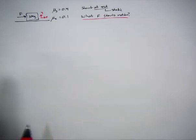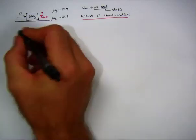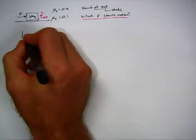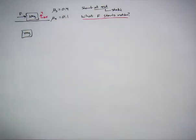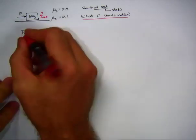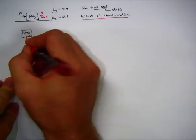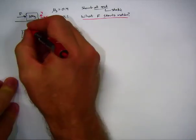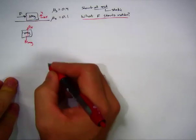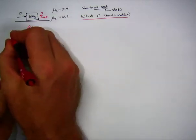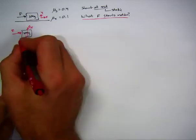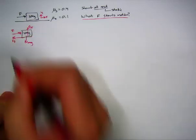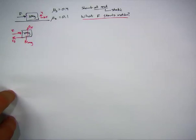The second step is our free body diagram. Let's take the 10 kilogram box and put free body arrows on it. We have Mg pointing down, the normal force pointing up, the applied force that we're pushing with pointing to the right, and friction opposing motion — the force of friction is in the opposite direction. Those are our four forces.